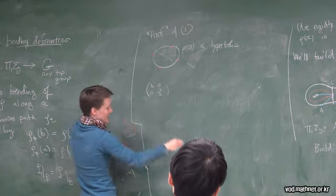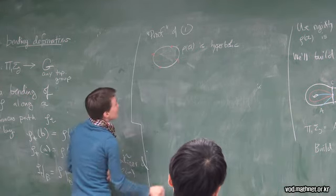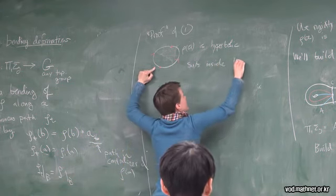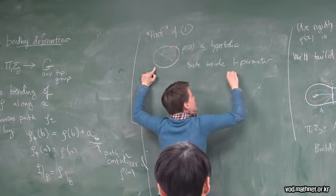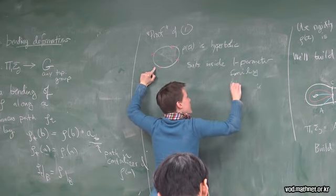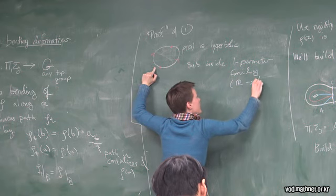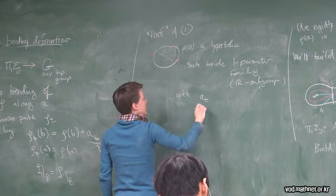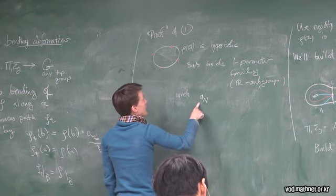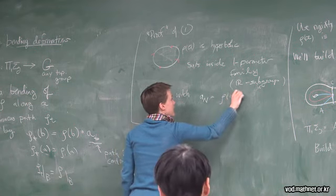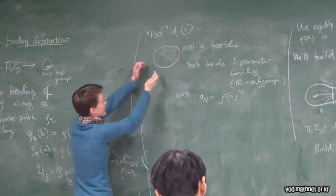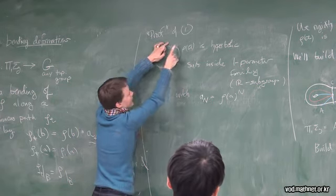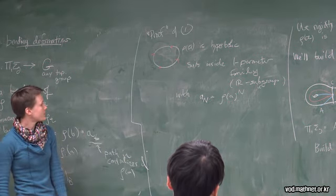If you imagine this by conjugating it actually into PSL_2(R) as something like, you know, lambda 0, 0, 1 over lambda as a matrix with this kind of dynamics, then you can vary lambda. And you'll get a one-parameter family of homeomorphisms. And you'll get a one-parameter family, meaning a real, like, R subgroup, a flow, so everything commutes. With, for at least the integer times, A_n is Rho of A to the n. So you think this is, Rho is moving points some definitive distance. You're taking the flow that's continuously moving points from there to there.